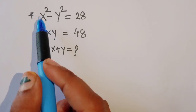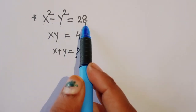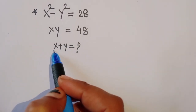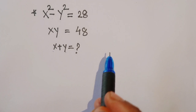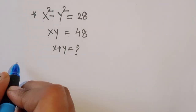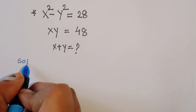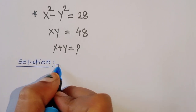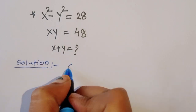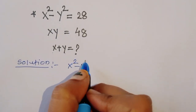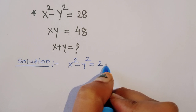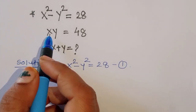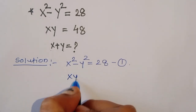The question is: given x² - y² = 28 and xy = 48, we have to find the value of x + y. Let's start the solution. What is given here: x² - y² = 28, this is equation 1.